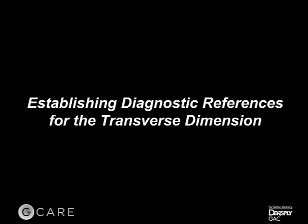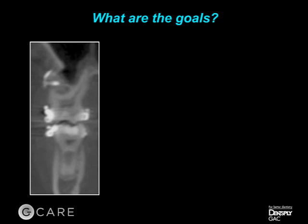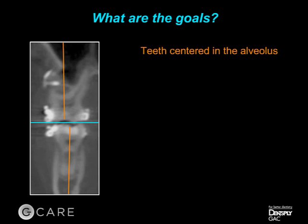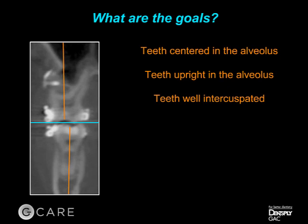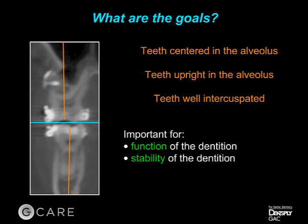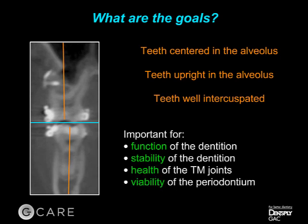So what are the goals? If we're looking at a cross-sectional cut, this is basically the ideal objective for the posterior dental relationships in a final result. The teeth are centered in the alveolus, they are upright in the alveolus, and they're well intercuspated. These are our three goals. This is important for the function of the dentition, stability of the dentition, health of the joints, and viability of the periodontium — my four reasons for why I'm looking to get the transverse normalized.